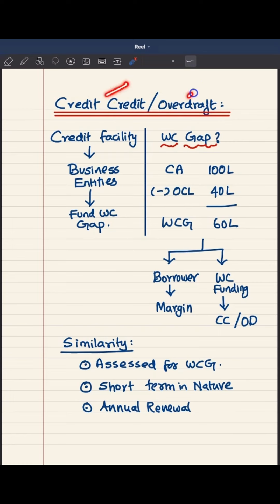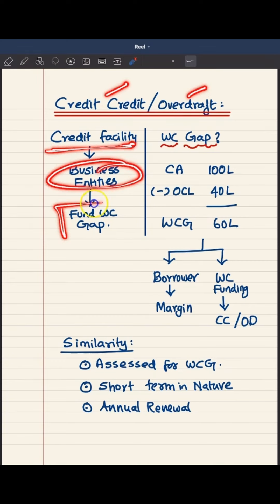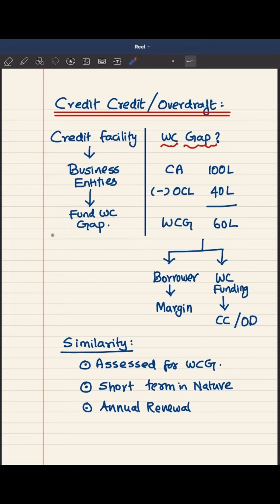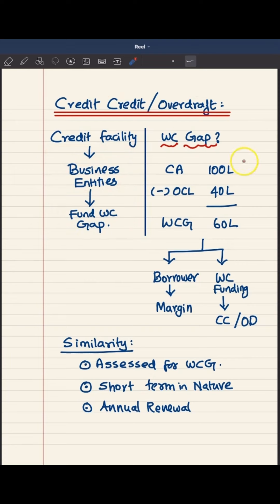Both cash credit and overdraft are credit facilities given to business entities for funding the working capital gap. We may have a question: what is this working capital gap? Let us understand with these numbers.